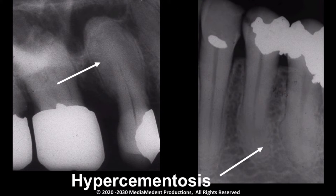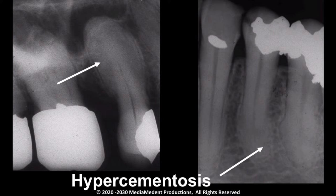Cementum is radiographically evident in the condition known as hypercementosis. The dental anomaly hypercementosis is of unknown origin and results in the excess deposition of cementum on the root of a tooth. Radiographically, this appears as a bulbous enlargement of the tooth's root. In cases of hypercementosis, the radio density of cementum is shown to be similar to that of dentin and bone. By itself, hypercementosis is a benign condition that requires no treatment.